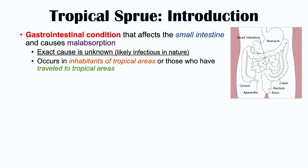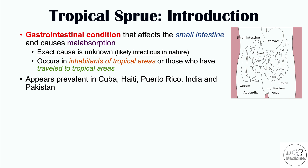As its name implies, it actually occurs in inhabitants of tropical areas or those who have traveled to tropical areas. It occurs more commonly in certain countries. Some of these include Cuba, Haiti, Puerto Rico, India, and Pakistan.